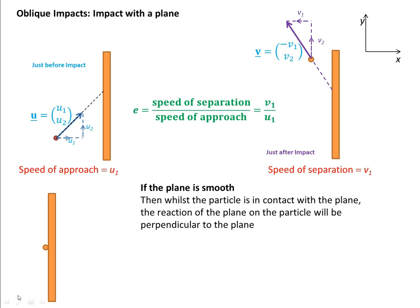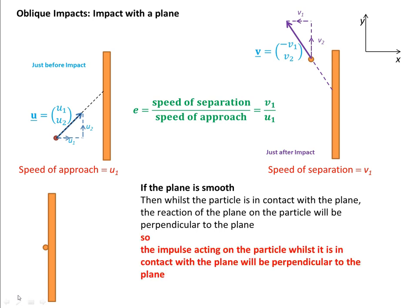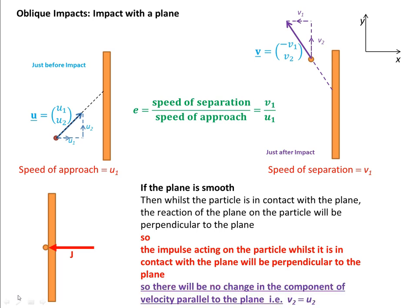If the wall or plane is smooth, then whilst the particle is in contact with the plane, the reaction of the plane on the particle will be perpendicular to the plane. So the impulse acting on the particle whilst it is in contact with the plane will be perpendicular to the plane. If the impulse is acting in the x-direction, there is going to be no change in the y-component of the velocity. In other words, v2 must be the same as u2.